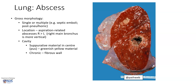Grossly, abscesses can be single or multiple as we have seen. Usually in the context of septic emboli or post-pneumonic abscesses, they can be multiple. If these are related to aspiration pneumonia or aspiration of food, they more often occur on the right side of the lung because the right main bronchus anatomically is more vertical.